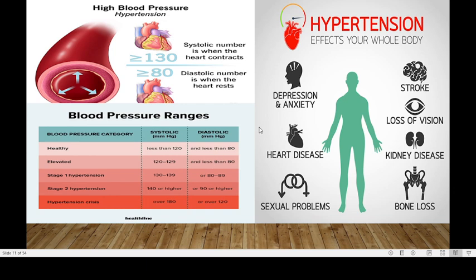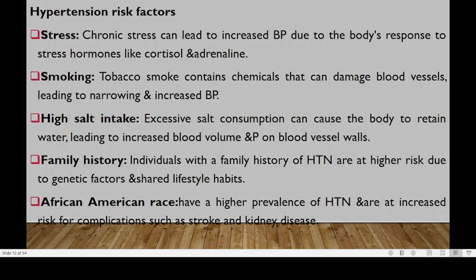Hypertension can affect our bodies in different ways. A patient could have depression or anxiety, stroke, cerebrovascular accident, loss of vision, kidney damage, bone loss, sexual problems especially impotence, and even heart diseases. There are several risk factors that could lead to someone developing hypertension, and one of the commonest is stress. Chronic stress could lead to increased BP because the body responds by producing stress hormones like cortisol and adrenaline, which stimulate the sympathetic nervous system, leading to increased heart rate and blood pressure.